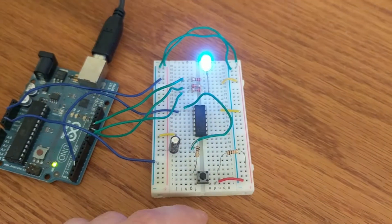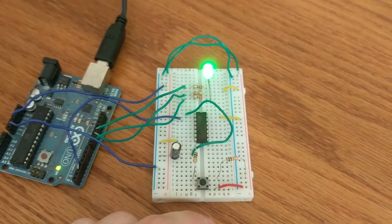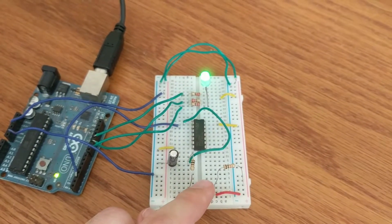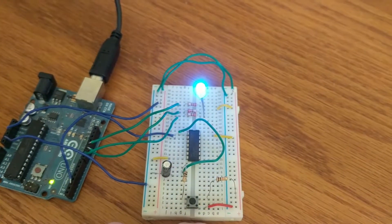So each time we press the button, it's going to go red, blue, green, and it's going to transition at whatever brightness it's currently at, just change to the next color.